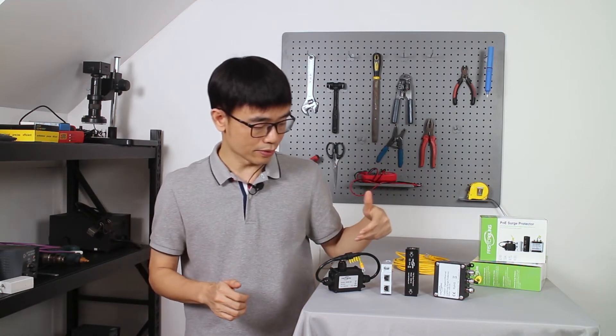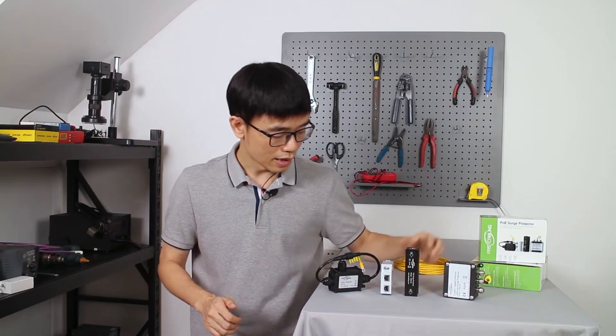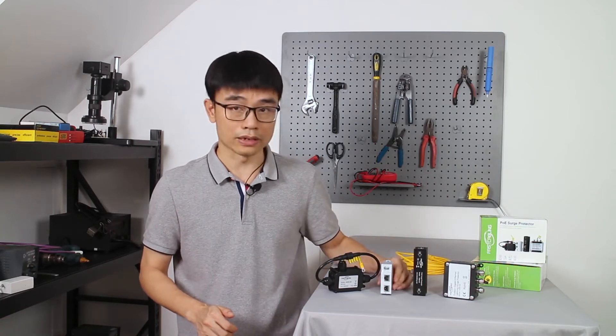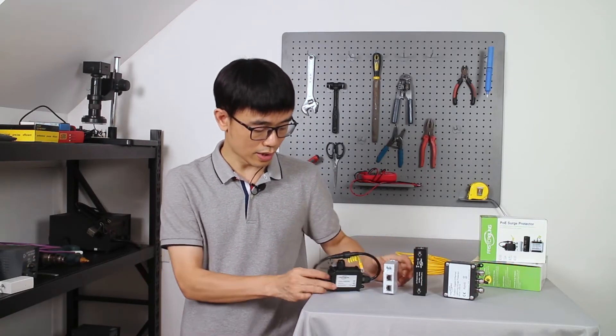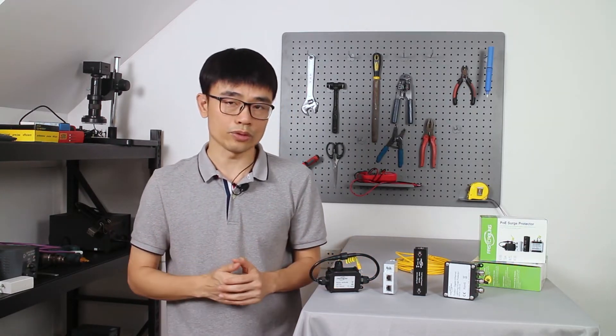Here we have different kinds of surge protectors. This is the outdoor type, this is the desktop type, and we also have DIN-rail mount type. And this is quite special - this is the surge protector for DC tail voltage.